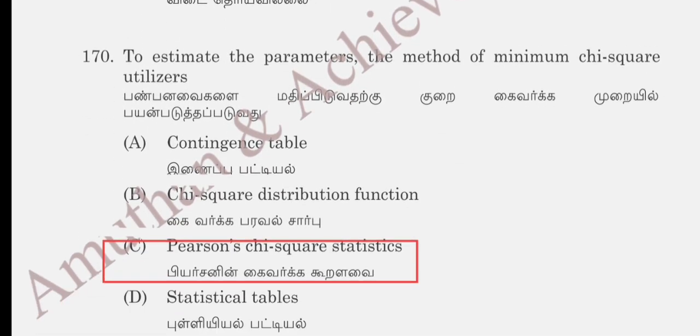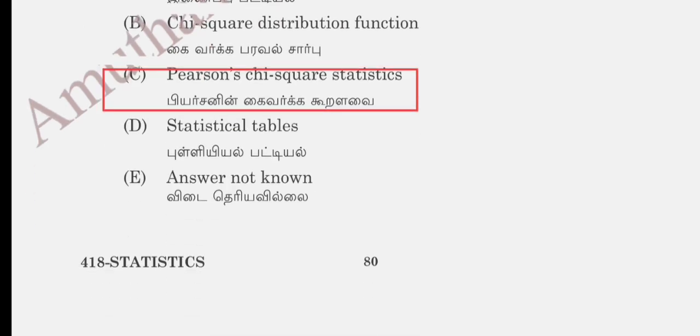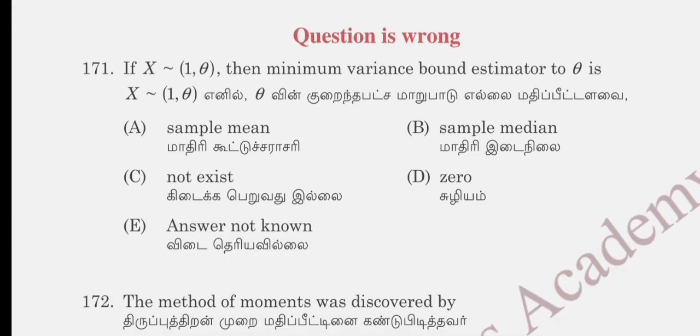Question 169: if a sufficient estimator exists, then it will be a function of the maximum likelihood estimate — options are maximum likelihood, unbiased, or consistent. Maximum likelihood is the correct answer. Question 170: to estimate the parameter, the method of minimum chi-square utilizes: contingency table, chi-square distribution function, Pearson chi-square statistics, or statistics table. Pearson chi-square statistics is the correct answer. Question 171 involves x as a random variable with a distribution (normal, uniform, or binomial) for a minimum variance bound estimator of theta.